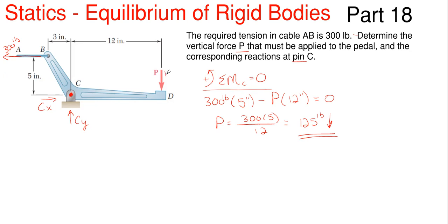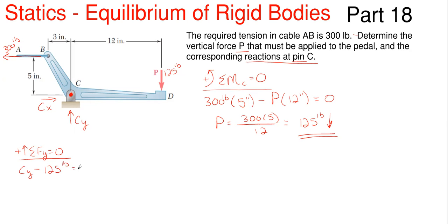Now with P known as 125 pounds, we can get the second part of the question asking for the reactions at pin C — determining Cx and Cy. Summing forces in the Y direction: Cy is a Y force, and P is the only other Y force going downward, so it's minus 125 pounds, equal to zero. Cy has to be 125 pounds, and since it came out positive, my assumed arrow direction of up was correct.